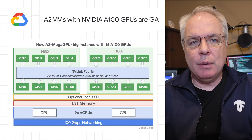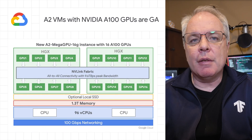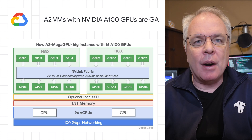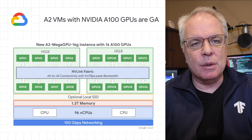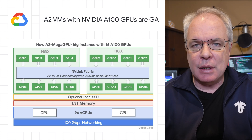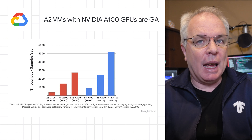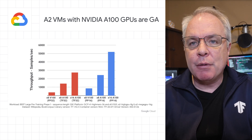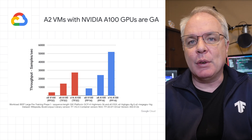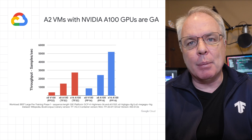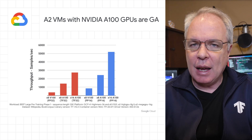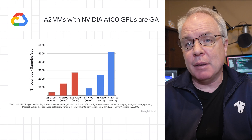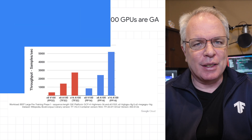We've now announced the general availability of A2 VMs based on the NVIDIA Ampere A100 Tensor Core GPUs in Compute Engine. Now you can run NVIDIA CUDA-enabled machine learning and high-performance computing, scale-out and scale-up workloads far more efficiently and at a lower cost. Check out the post for regional availability and how to get started.